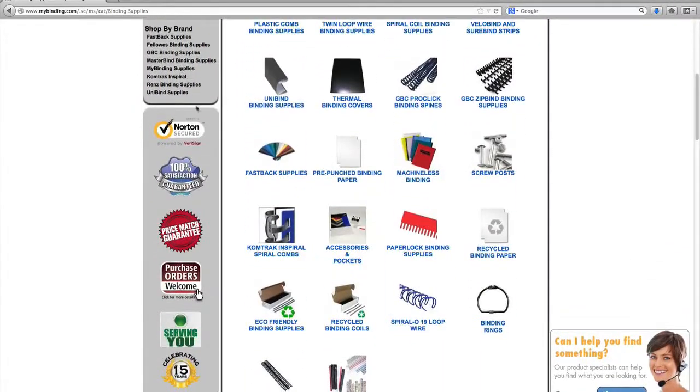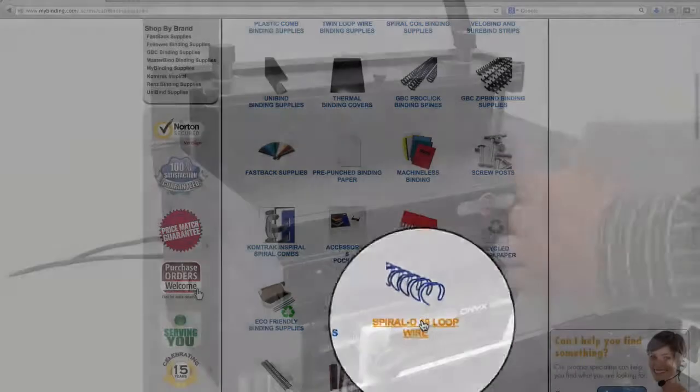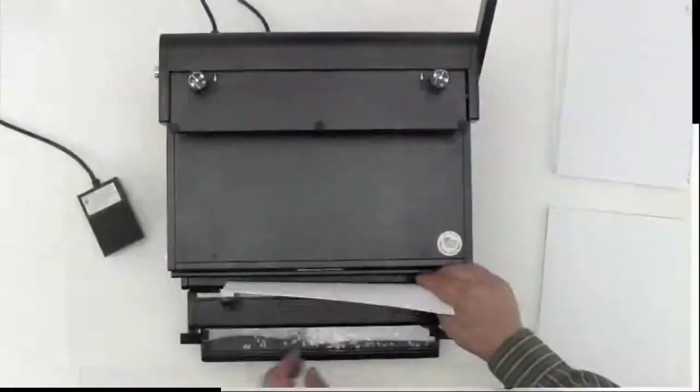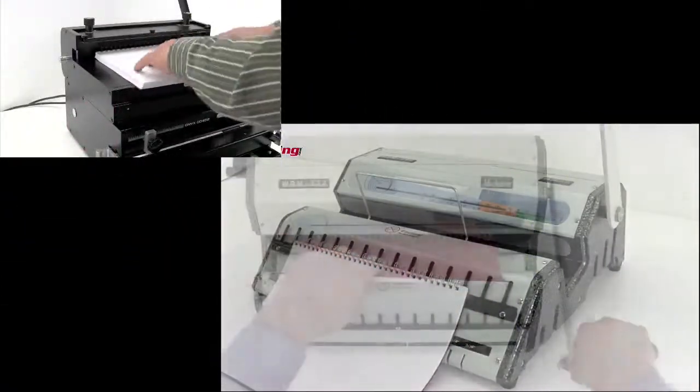Our spines are specifically designed for use by individuals who have a plastic comb binding punch with a built-in wire closer, or a separate punch and a separate wire closer.